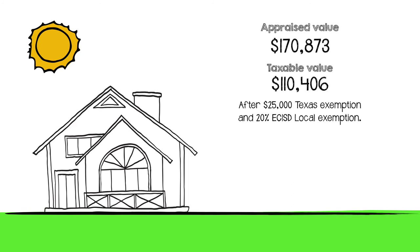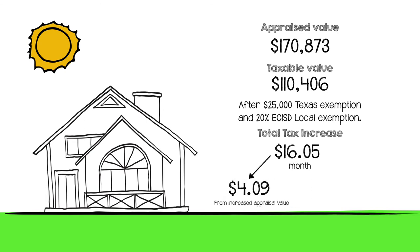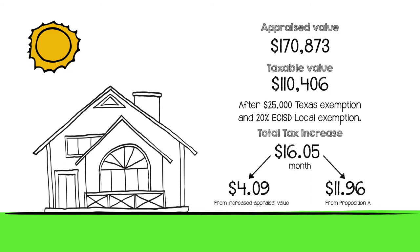If ECISD Proposition A is successful, it would mean a total tax increase of $16.05 per month for that average home. That increase breaks down as follows: $4.09 per month is due to the increase in appraised value, and $11.96 per month would come specifically from Proposition A, for a total increase of $16.05 per month.